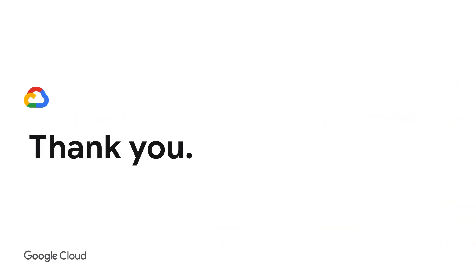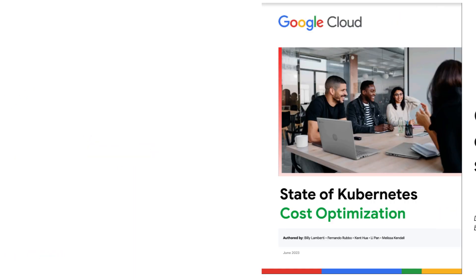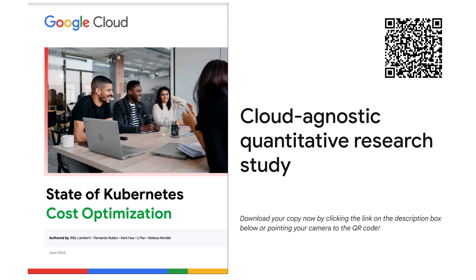We hope you found this video helpful. Check out the links in the description to learn more about optimizing your Kubernetes workloads on GKE clusters. In other videos, you'll learn about the importance of setting appropriate resource requests for workloads and how to right-size your workloads. To learn more, check out our special report on the state of Kubernetes cost optimization, which is a cloud-agnostic quantitative research study based on anonymized real-world usage data. The report examines how Kubernetes capabilities and signals can help identify key areas you should prioritize to achieve greater reliability and cost-efficiency. Check the description for the link.